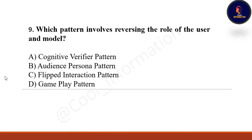Next question: Which pattern involves reversing the roles of the user and the model? Options are cognitive verifier pattern, audience persona pattern, flipped interaction pattern, or gameplay pattern. Correct option is C — the flipped interaction pattern involves reversing the roles of the user and model.